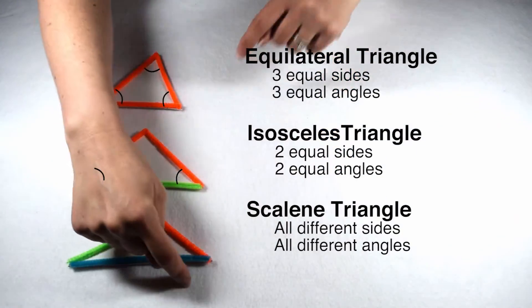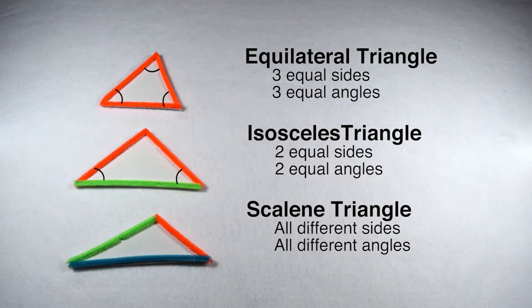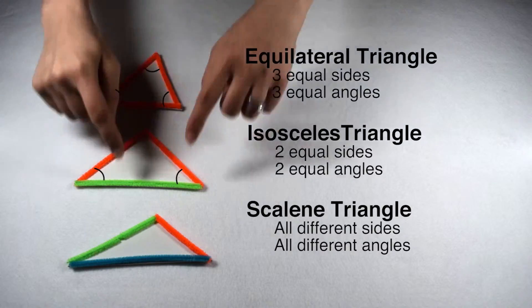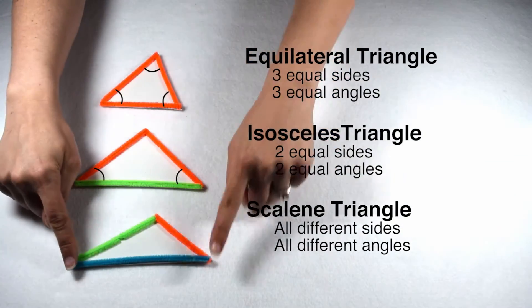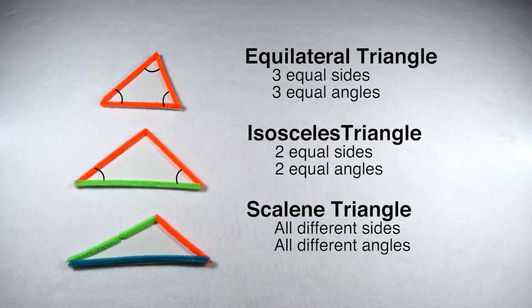If a triangle has three different sides, then it's classified as a scalene triangle. Since scalene triangles have three different side lengths, they also have three different angle measures.